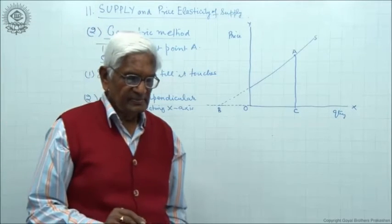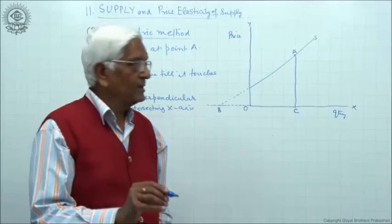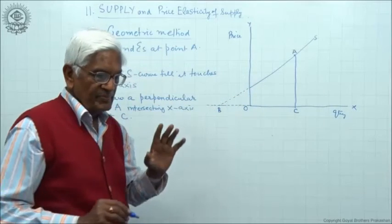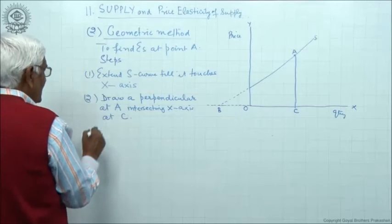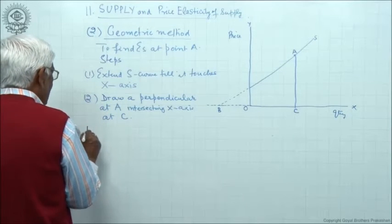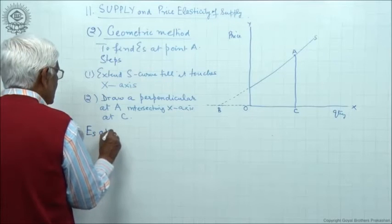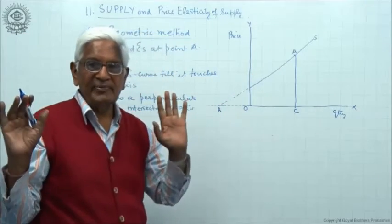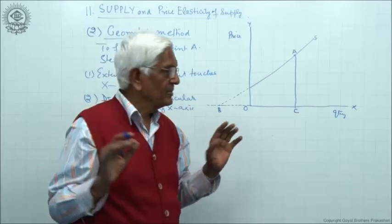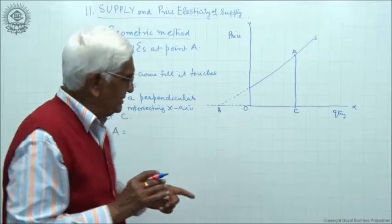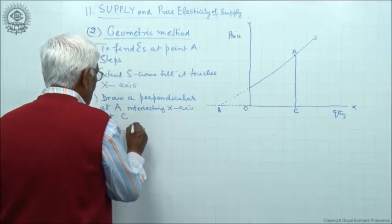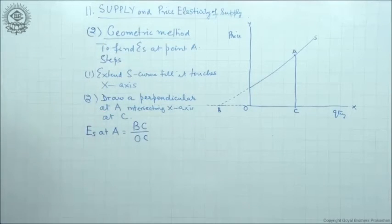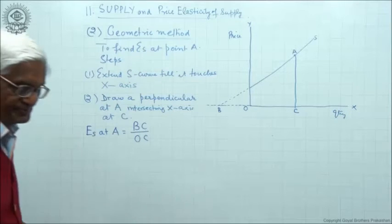These are the two steps we have to take. Then, after taking these two steps, the elasticity of supply at point A — remember it refers only to point A; if you change the point, the elasticity of supply will change — is taken as equal to BC upon OC.